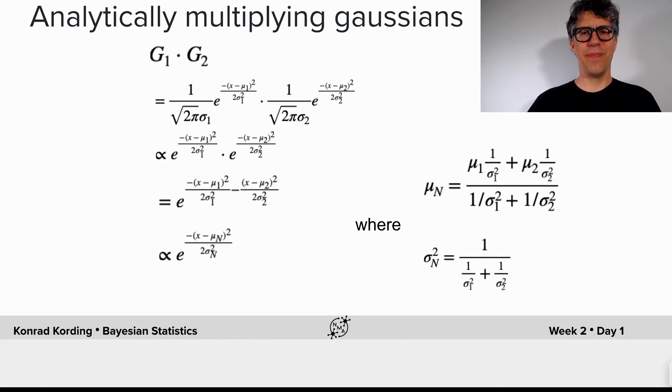Gaussians are fantastic because what we just did by point-wise multiplying the probability distribution, it turns out that we can also analytically solve that. So what do we have?